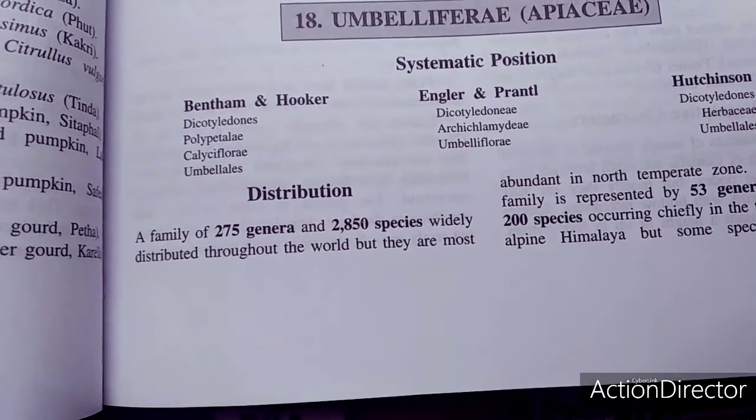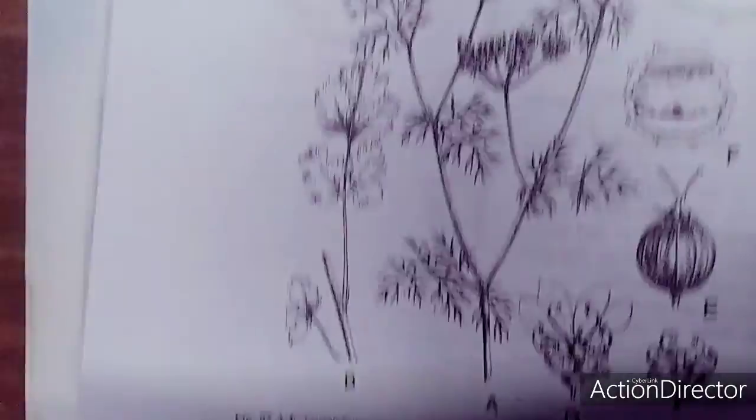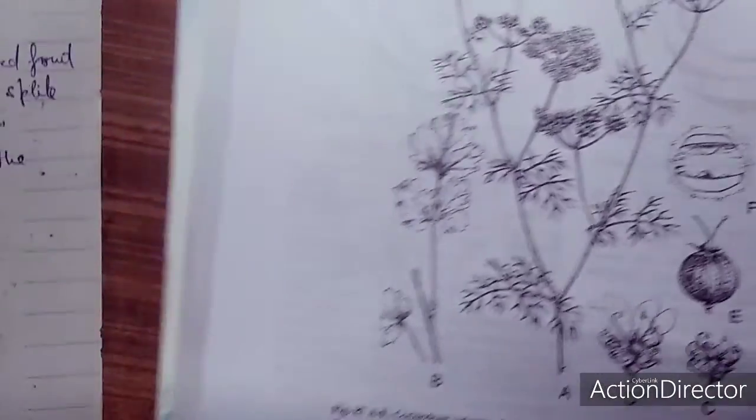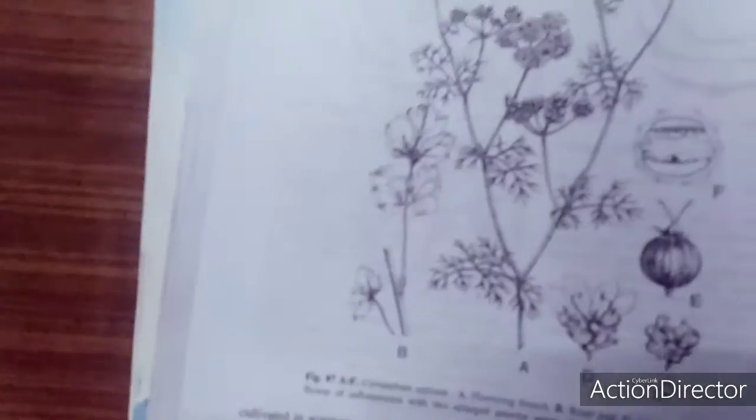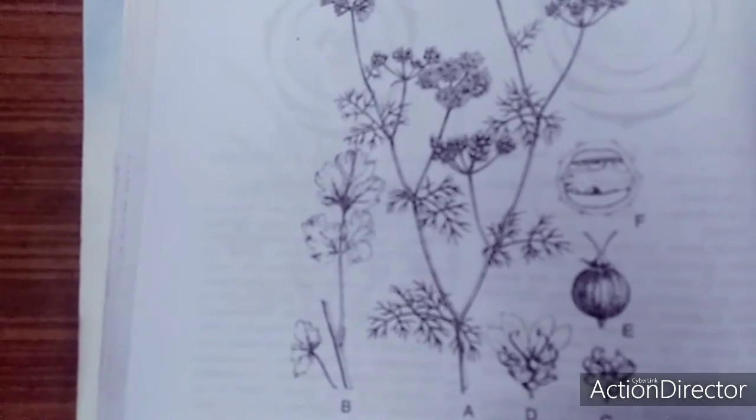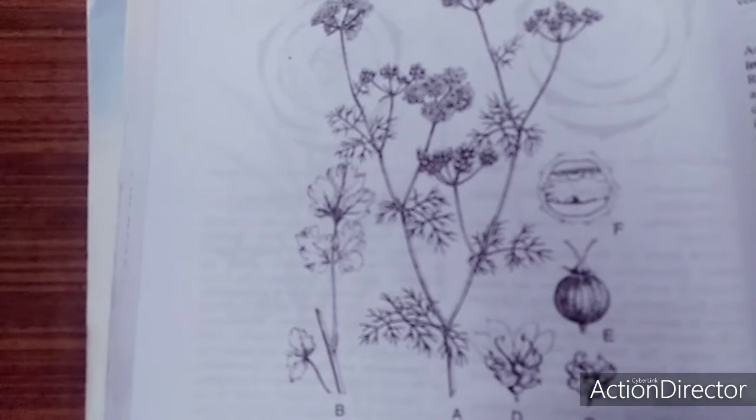Before going to this family, we will discuss certain interesting aspects connected with it. This is Coriandrum sativum, showing the structure. Very interesting, because this family is known as Apiaceae, also known as Umbelliferae previously.